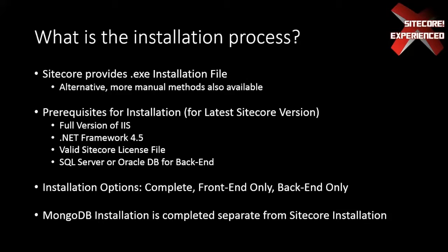For the latest version, you need a full version of IIS, the .NET Framework 4.5, a valid Sitecore license file, and some sort of database for back-end storage. When you run through the installer you're given a few options: complete, front-end only, or back-end only. For developer machines I recommend complete — they can run everything since their sole purpose is to serve the developer. Front-end only is for web servers and back-end only for database servers. Best practice for enterprises is to split those servers out.